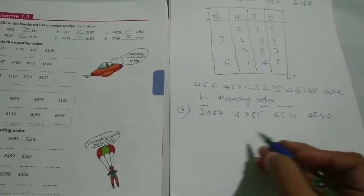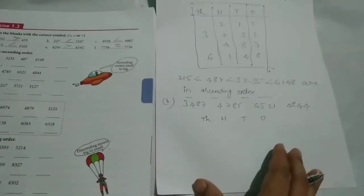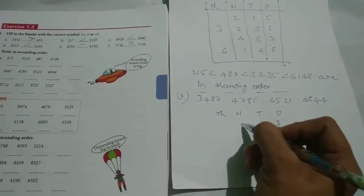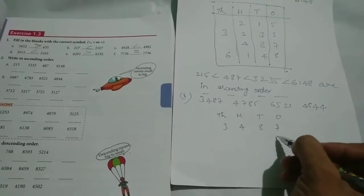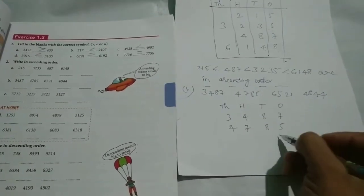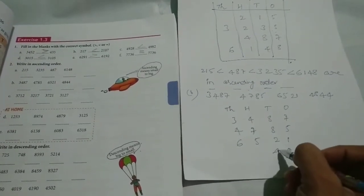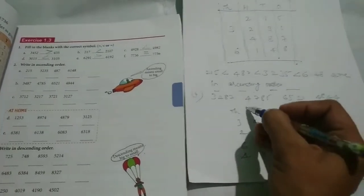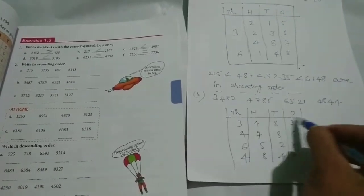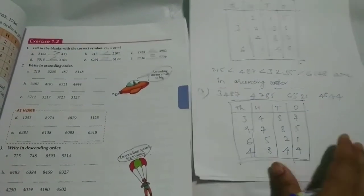For the next one also we have to prepare the chart. Ones, tens, hundreds, thousands. Put the numbers: 7, 8, 4, 3. Next is 5, 8, 7, 4. Next: 1, 2, 5, 6. 4, 4, 8, 4.